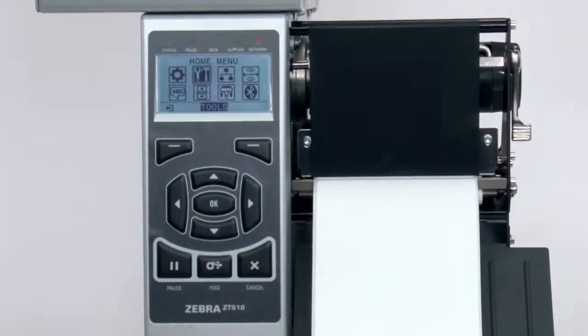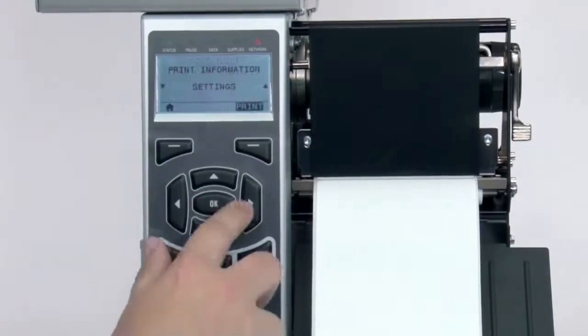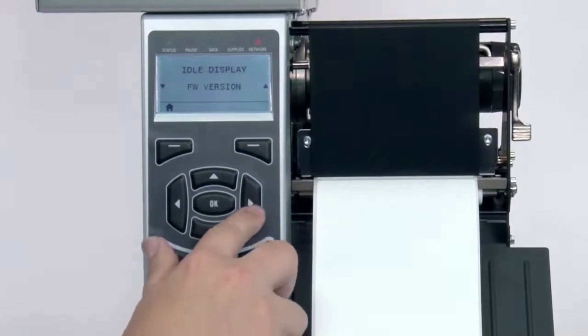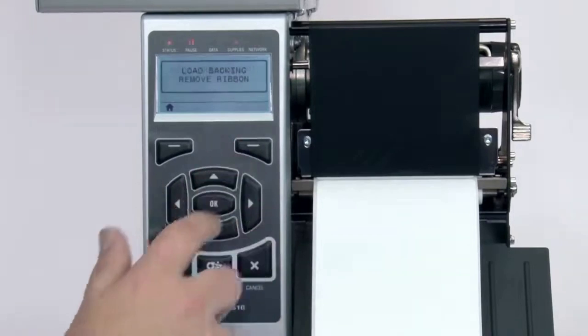After you have the sensor properly located, select media ribbon calibration in the menu. Press the right select button under the display to start. Be careful not to press the button more than once.